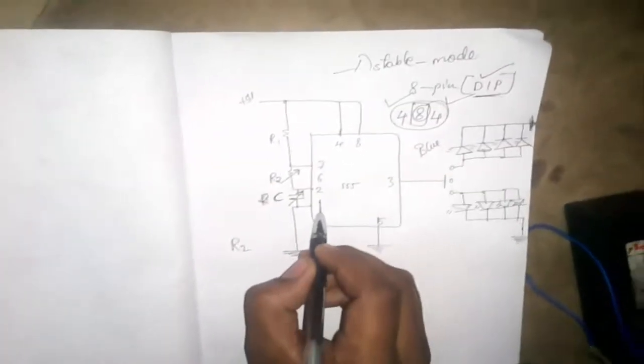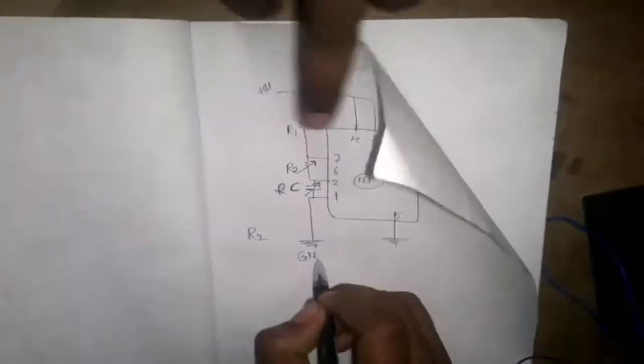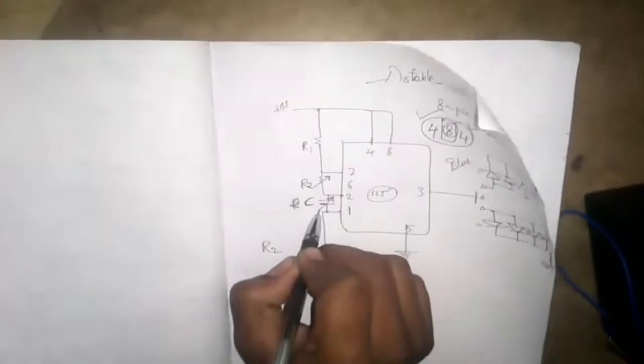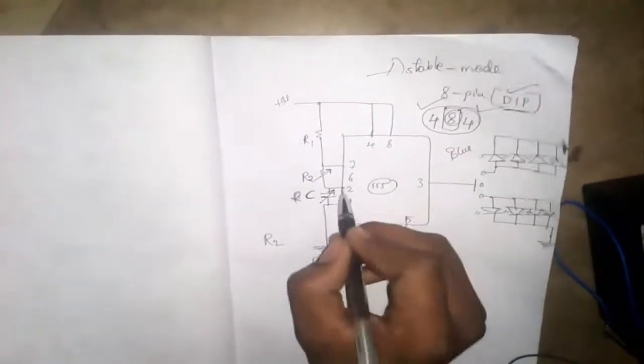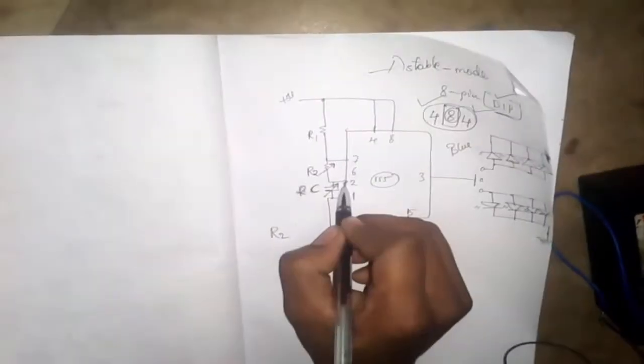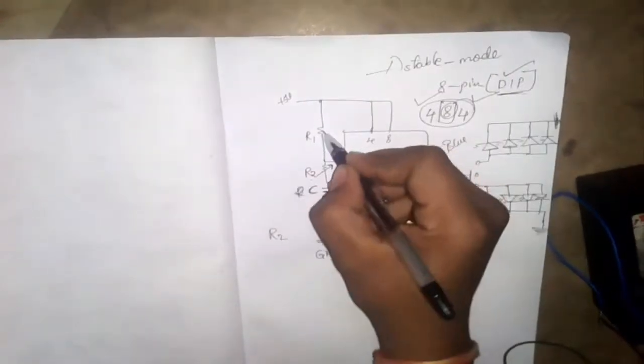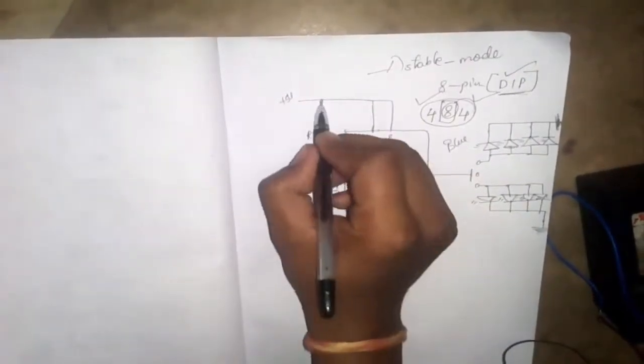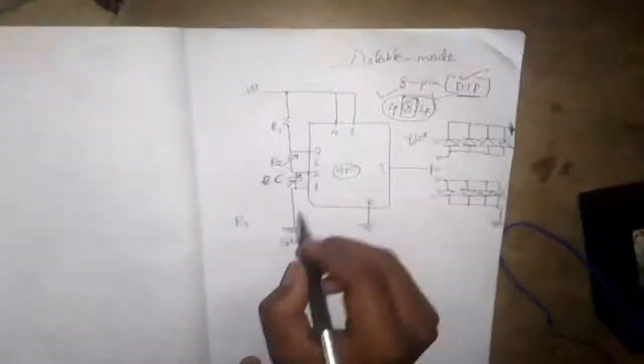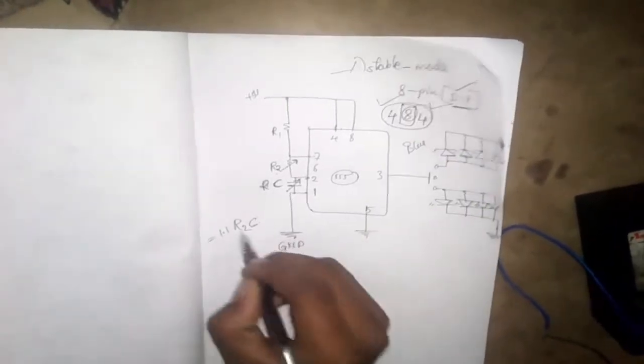First pin of this 555 goes to the ground and the second pin to first pin I'm connecting here a variable capacitor. From 7 to 6, from 7 to 2 I'm connecting variable resistor and I'm connecting a fixed resistor from VCC to pin 7. Now according to this time period 1.1 R2C, according to this time period I'm flashing these LEDs.